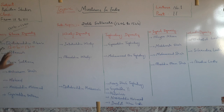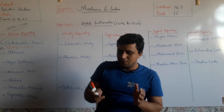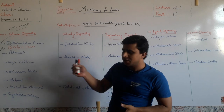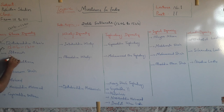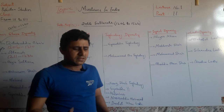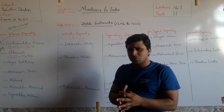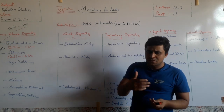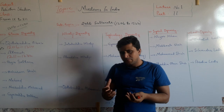After Qutbuddin Aibak, his son-in-law Iltutmish occupied the throne of the Slave dynasty, ruling from 1211 to 1236. Iltutmish is also called the real founder of the Slave dynasty as well as the Delhi Sultanate, because he was the first ruler of the Delhi Sultanate who introduced significant reforms.